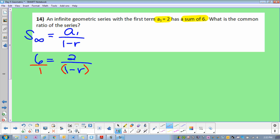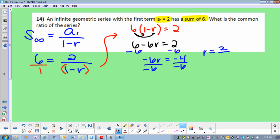You can turn this into a fraction. Cross multiply. I'll do that over here. So 6 times 1 minus r equals 2 times 1, which is 2. Distribute. Subtract that 6 out of there. Then you have negative 6r equals negative 4. Divided by negative 6. And then r equals 2/3. Great.